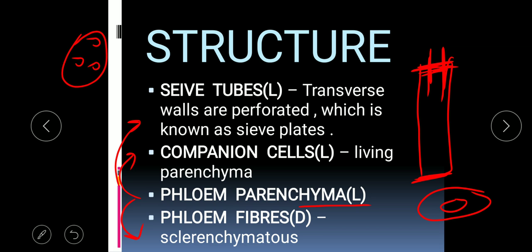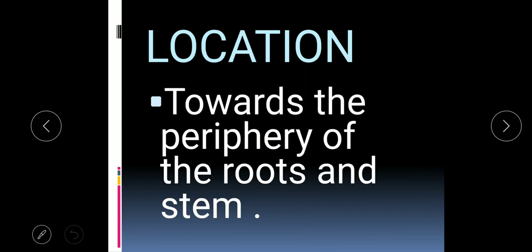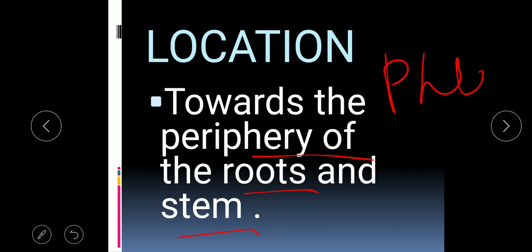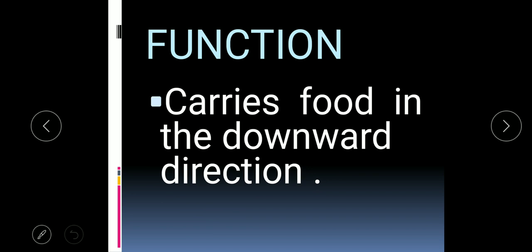The last dead cell type present in phloem is the phloem fiber, which is sclerenchymatous in nature. Since sclerenchyma is already a dead cell type, phloem fibers are also known as bast fibers. Their location is towards the periphery of the roots and stem.